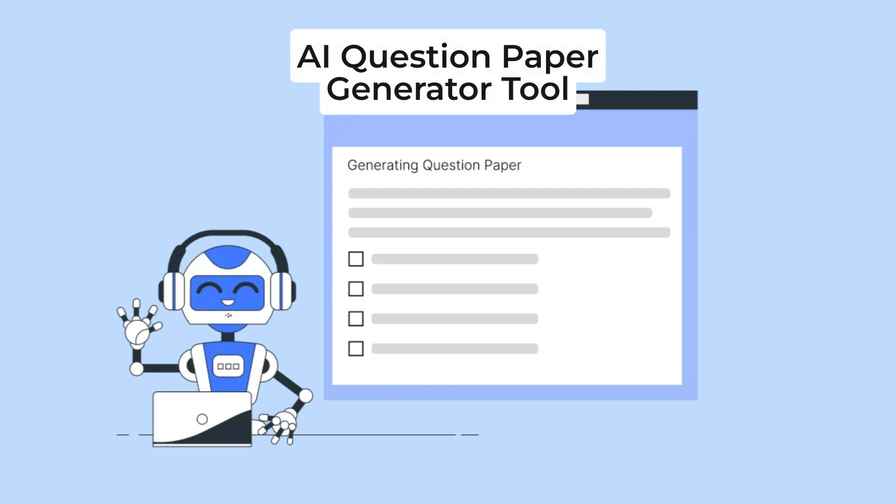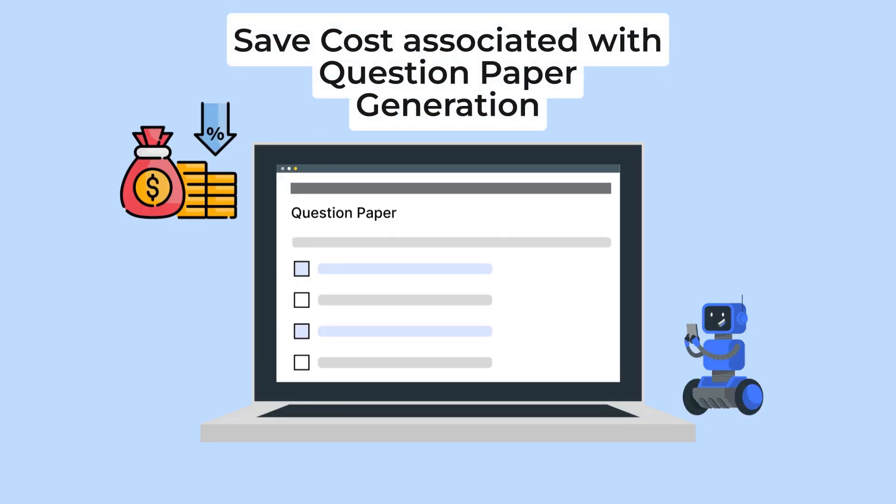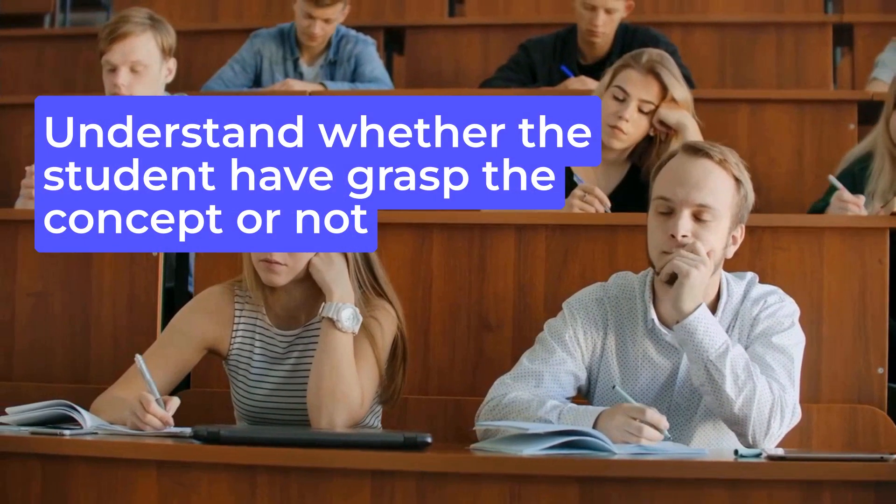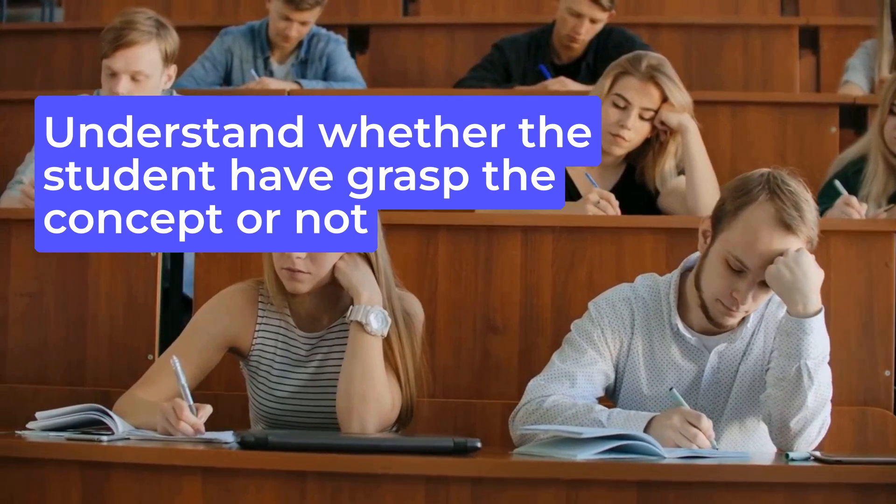If you want to generate questions based on a PDF, a particular chapter, a Word document, or targeted to a specific audience, you can use the AI question paper generator provided by ecologa.com, which will certainly help you save a lot of time in the question paper generation process. It will also save costs associated with the overall process. You can assess students more effectively and determine whether students have grasped concepts associated with various subjects or topics.